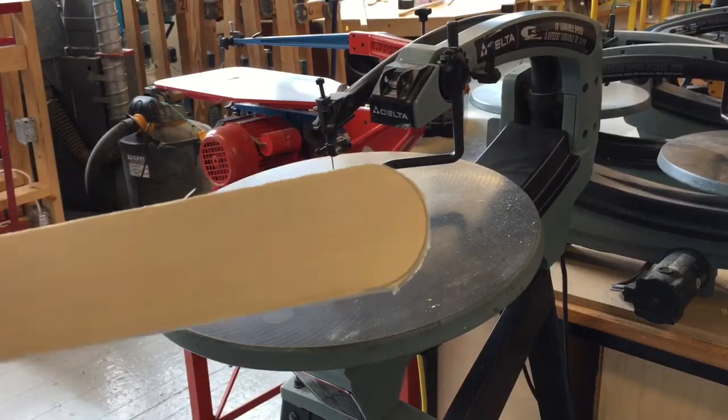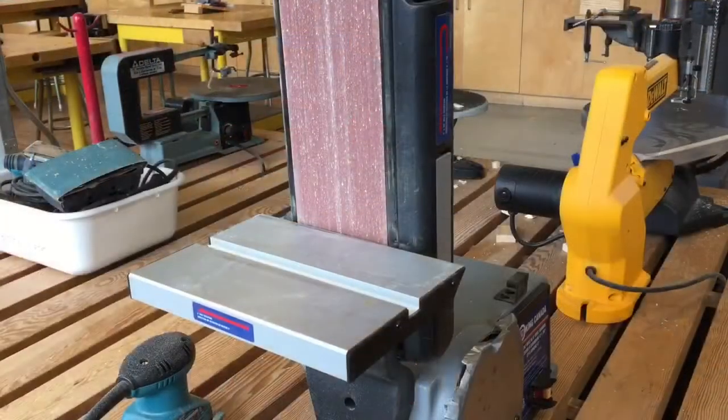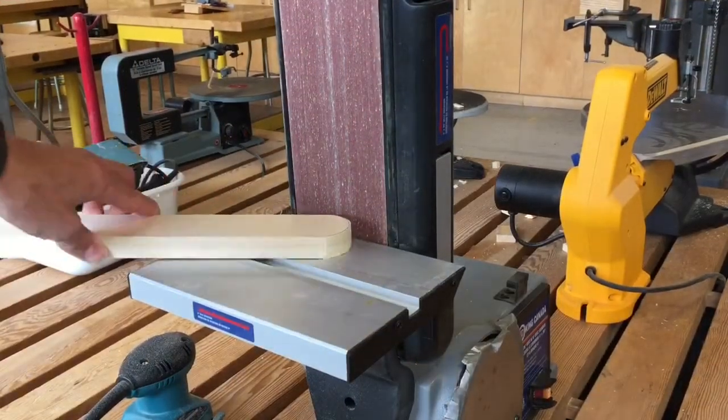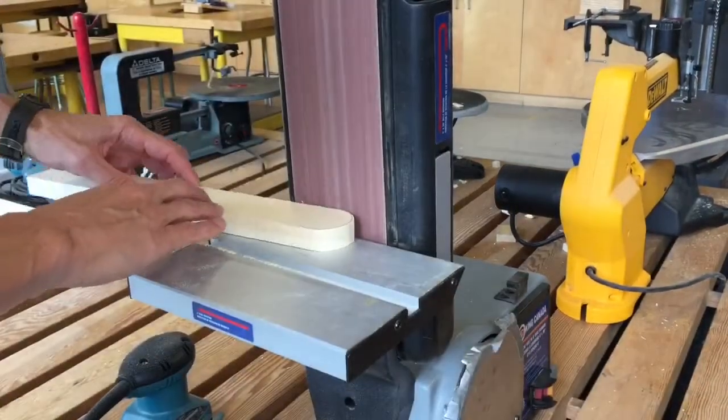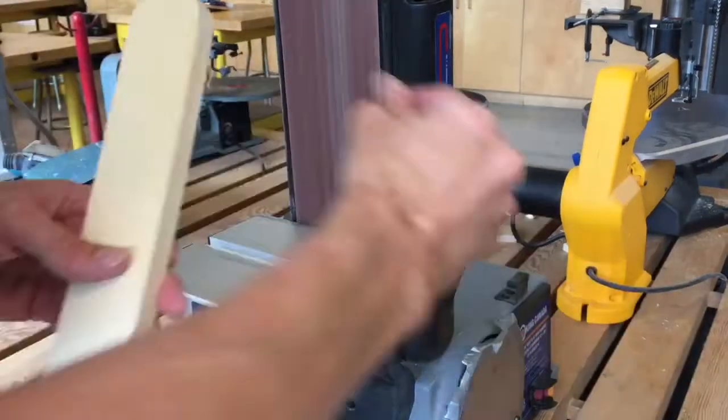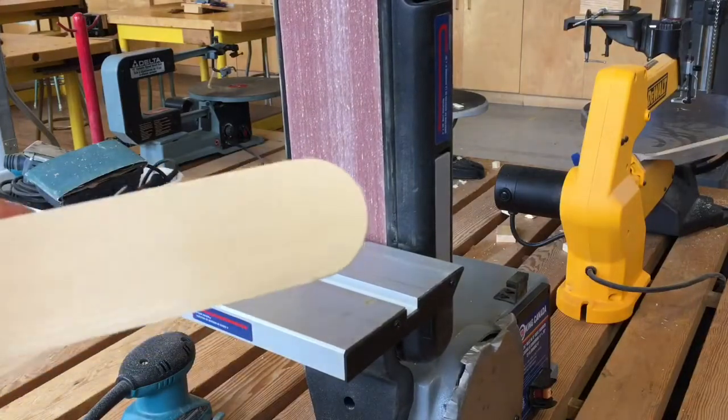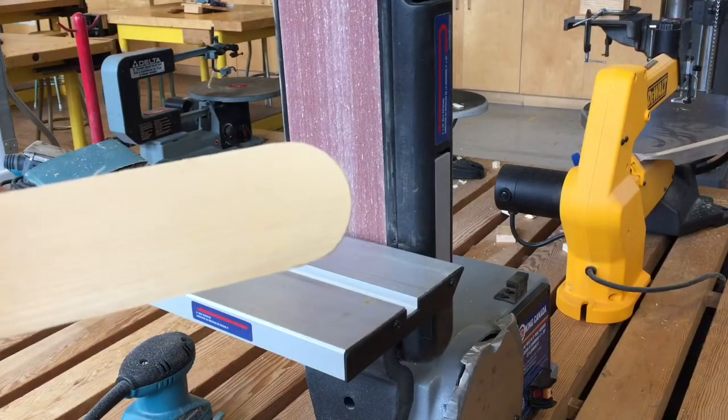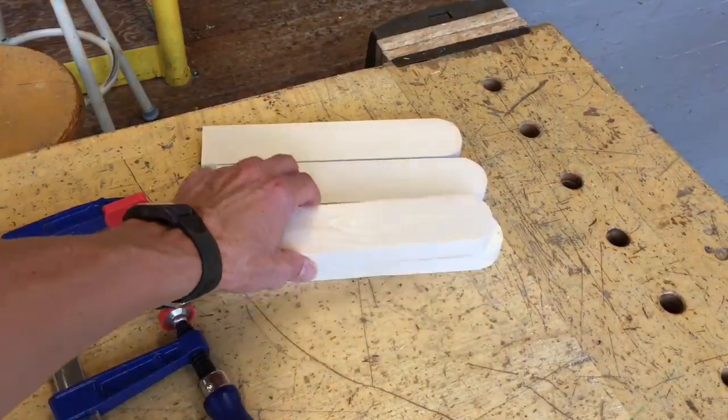Cut pretty close to the line but not over it, and then we'll sand it to perfect. To sand it, we're just going to roll it back and forth like this. Pretty good, a little bit of hand sanding for the edges and that'll be good. Just got to do the other seven pieces.